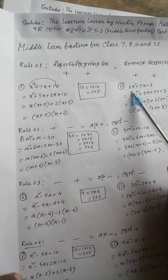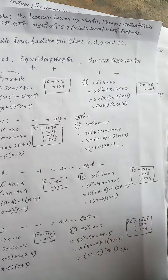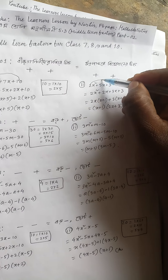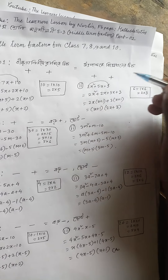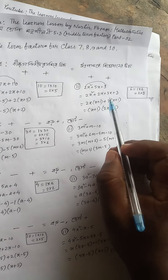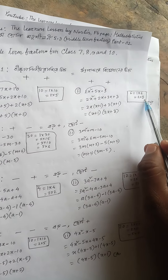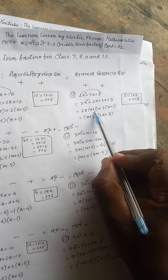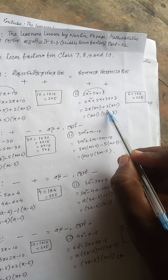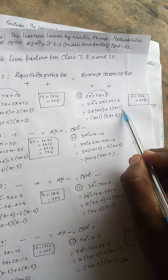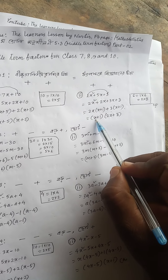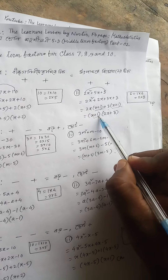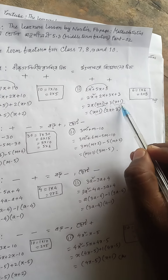This is x squared plus 3x plus 5x plus 3. In this, 2x squared is 6x squared. This is 2x plus 3x. So 2x plus 1, plus 3x plus 1, so 3x plus 1 into 2. The 2x plus 1 means 2x plus 3.